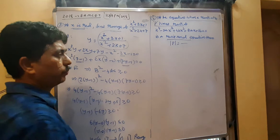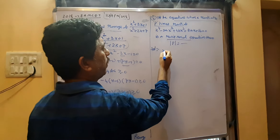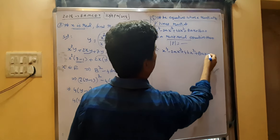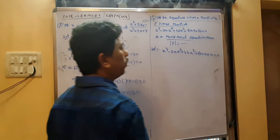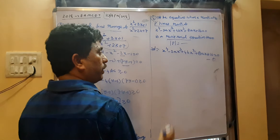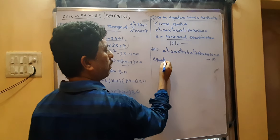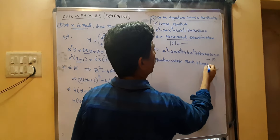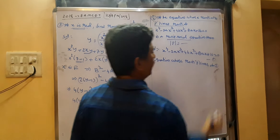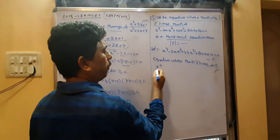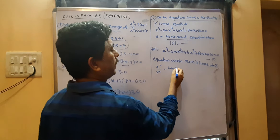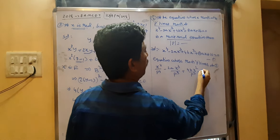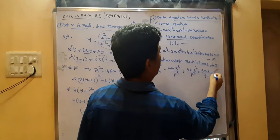First, find the equation whose roots are p times the roots of equation 1. The given equation is x⁴ − 2ax³ + 4bx² + 8ax + 16 = 0. Replacing x by x/p: (x/p)⁴ − 2a(x/p)³ + 4b(x/p)² + 8a(x/p) + 16 = 0. That gives x⁴/p⁴ − 2ax³/p³ + 4bx²/p² + 8ax/p + 16 = 0.